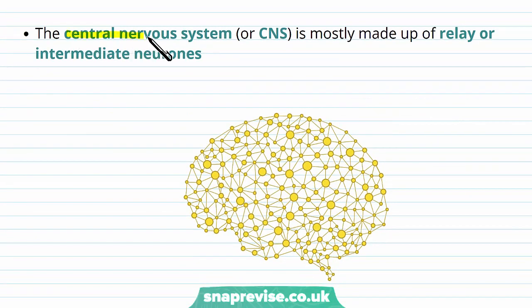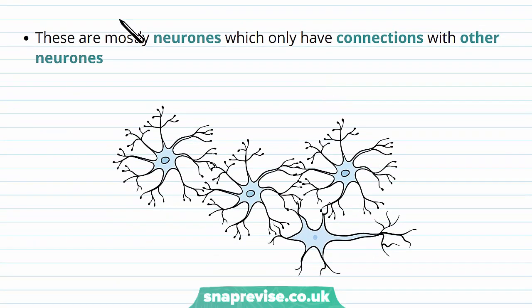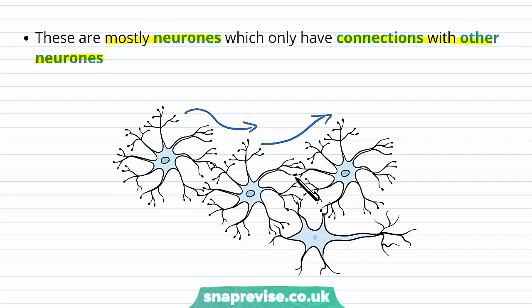The central nervous system, or CNS, is mostly made up of a type of neuron called a relay, or intermediate neuron. When we look in the brain and the spinal cord, these are the types of neurons we tend to see. These intermediate neurons only have connections with other neurons — the relays send signals between other neurons and connect them together in different networks. Eventually these signals get to longer neurons and are sent to either an effector or a receptor. Relays do what the word means — they pass it on — and they're intermediate, so they're in between neurons.